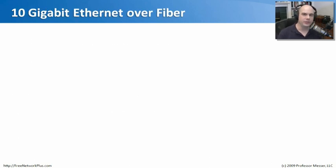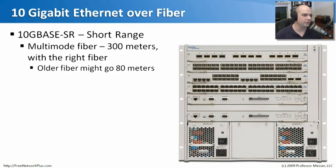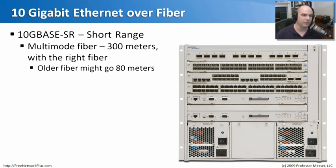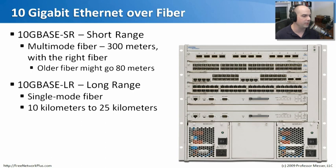The latest popular Ethernet implementations are over fiber running at 10 gigabits per second — extremely fast compared to the 10 megabits per second of 10Base-T. 10GBase-SR stands for short range: 10 gigabit per second baseband communication over short range using multimode fiber, going about 300 meters with the right kind of fiber. Some older types of fiber might only go as far as 80 meters, so when implementing 10 gigabit Ethernet you may need to install new fiber to reach those 300 meters.